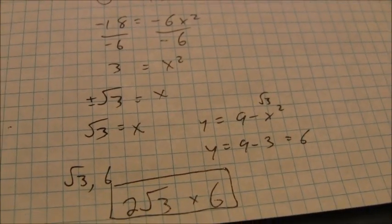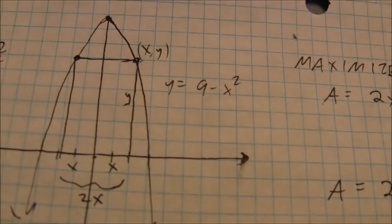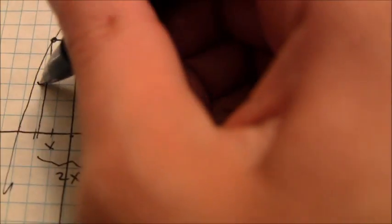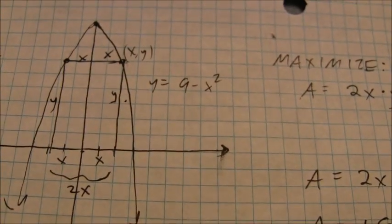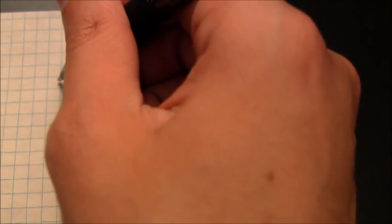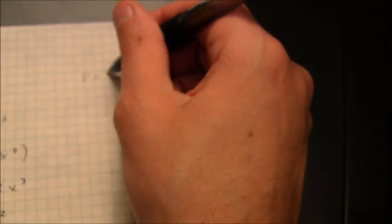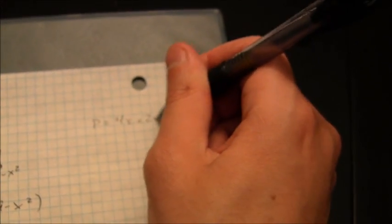To find the maximum perimeter, we can go back and write an equation for the perimeter. You're going to have an x and an x up here, a y and a y over here. The perimeter, there are 2 y's there, there are 4 x's. So the perimeter is represented as 4x plus 2y.